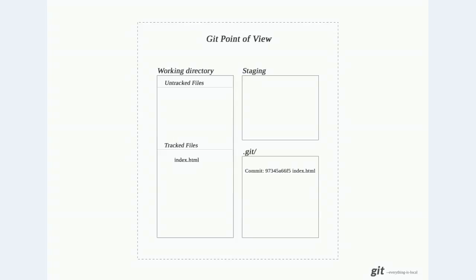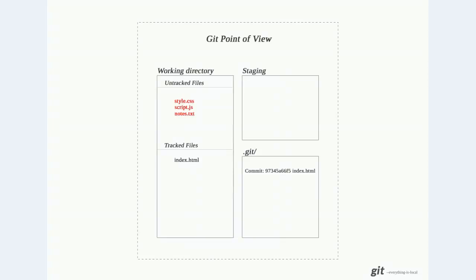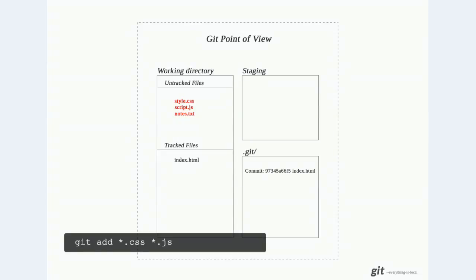Now we want to start adding some files to our project, so we'll add a .css, a .js, and a .txt file. Git sees those as untracked files. To start tracking these we'll use the git add command. You can see we're using wildcards, and we can also list multiple files separated by spaces. Notice that we're not going to track the .txt file, so only the .css and the .js file are put on the stage.